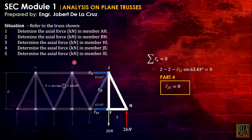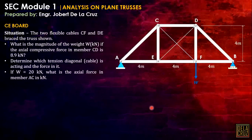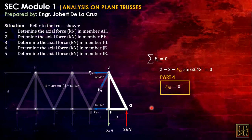For the last part, determining the force in member IE, by inspection at joint E — since the adjacent members GE and JE carry zero force — there is no force to resist at that joint. Therefore the force in member IE should also be zero. This can be verified by equilibrium at joint E.